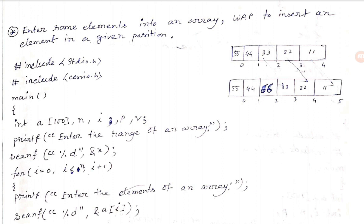We are going to talk about the array. The index is written on the right side. The elements are: 55, 44, 33, 22, 11. There is a number of data elements in this array.